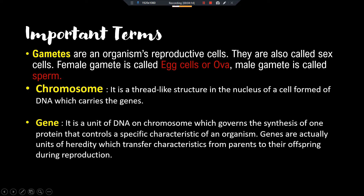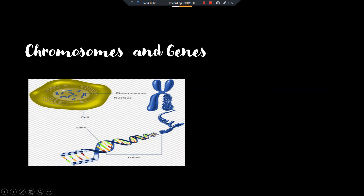When reproduction takes place, these characters are transferred from parents to offspring, and the unit of heredity is genes. By this diagram you will understand properly: this is a cell; in the cell there is a nucleus; in the nucleus there are chromosomes. You can see here — this is DNA, and the unit of DNA is called genes. Every gene is responsible for formation of a specific protein, leading to a specific character. So the unit of heredity is genes.